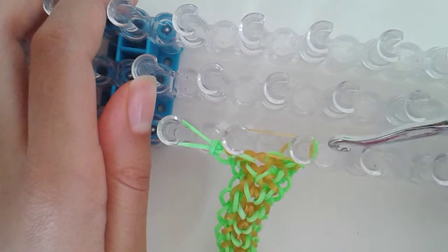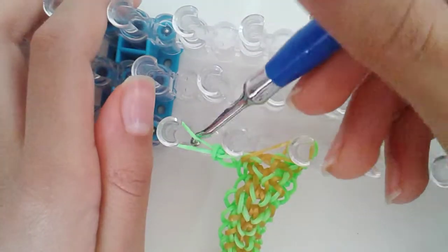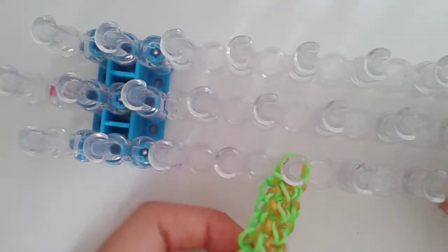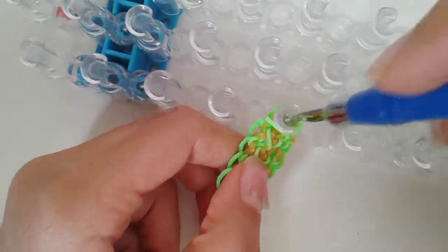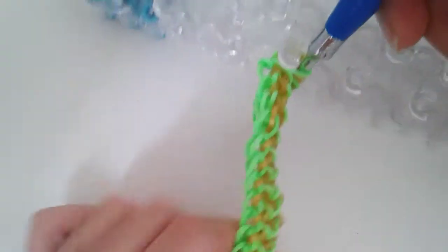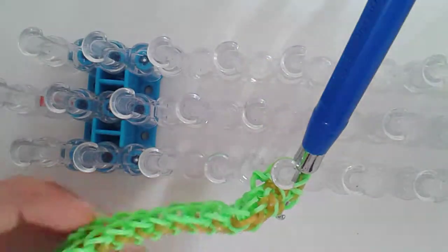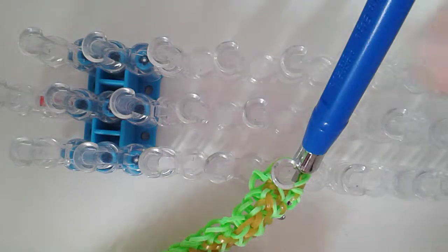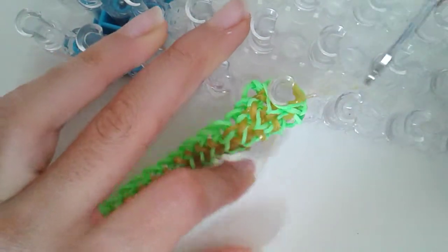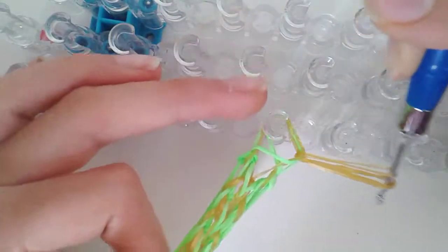You will be sticking in your hook in there, grabbing all the rubber bands, taking one rubber band, going through all those rubber bands, and taking it off like that. Now you will be taking your c-clip and attaching it over there like that.